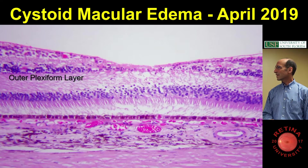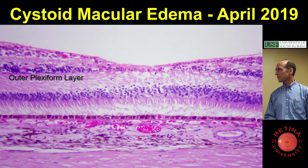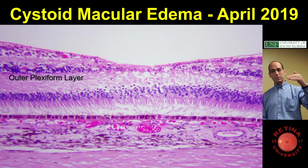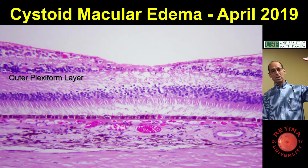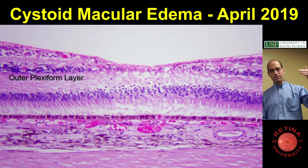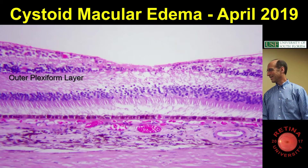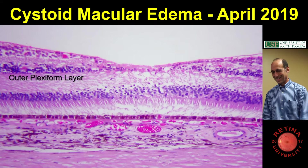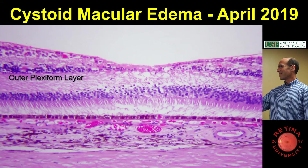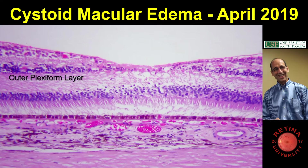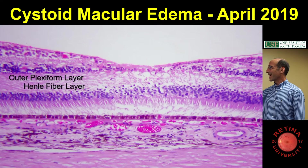So you've got the outer plexiform layer there. And that's all the synapses coming up — you've got the internuclear layer with the bipolar and the horizontal cells.